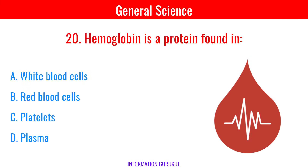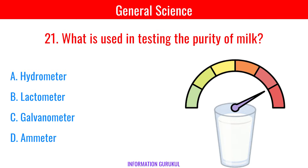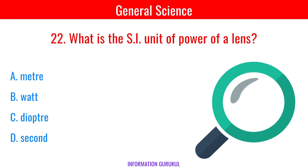Hemoglobin is a protein found in red blood cells. What is used in testing the purity of milk? Lactometer. What is the SI unit of power of a lens? Diopter.